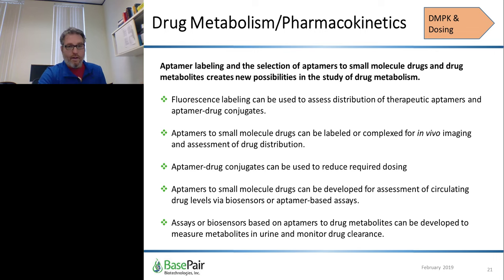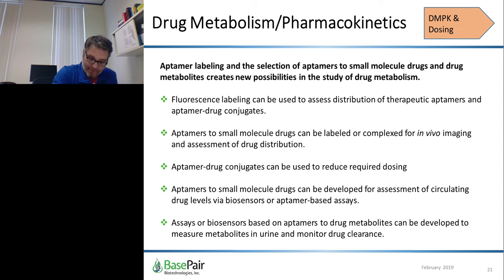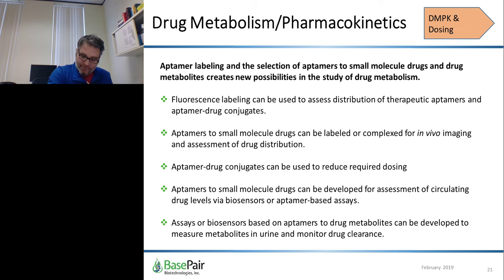What is the relevance of that? Aptamer labeling and the selection of aptamers to small molecule drugs and drug metabolites creates new possibilities in the study of drug metabolism. Fluorescence labeling can assess distribution of therapeutic aptamers and aptamer drug conjugates. Aptamers to small molecule drugs can be labeled for in vivo imaging and assessment of drug distribution in the body. Aptamer drug conjugates can reduce required dosing. Aptamers to small molecule drugs can be developed for assessment of circulating drug levels via biosensors or aptamer-based assays, and assays based on aptamers to drug metabolites can be developed to measure metabolites in urine and monitor drug clearance.